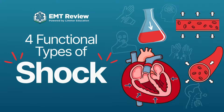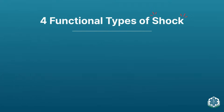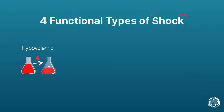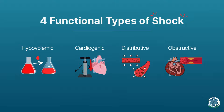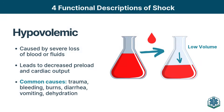Let's talk about shock. There are four functional types of shock: hypovolemic, cardiogenic, distributive, and obstructive. Hypovolemic is low volume — we think a lot about bleeding, but don't forget about diarrhea, vomiting, dehydration that you might see in a hyperglycemic patient, and kids who aren't feeding. The number two leading cause of death in kids worldwide is diarrheal diseases.